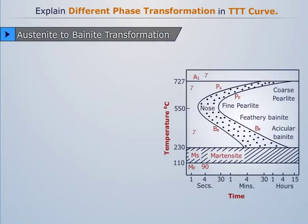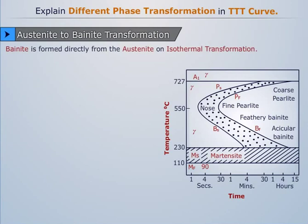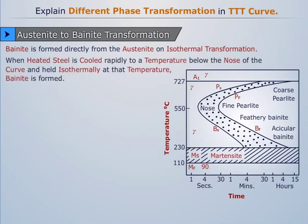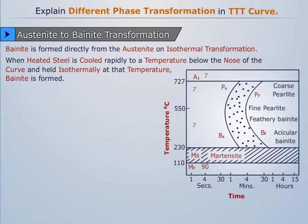Austenite to bainite transformation. Bainite is formed directly from the austenite on isothermal transformation. In simple words, we can say that when heated steel is cooled rapidly to a temperature below the nose of the curve and held isothermally at that temperature, bainite is formed.